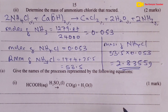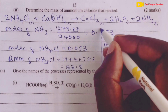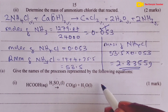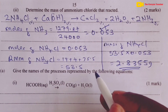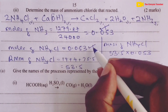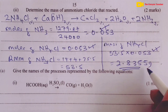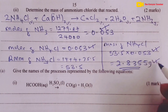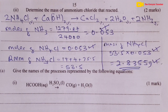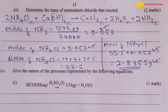This earns 2 marks: half for moles of ammonia, half for the correct 1:1 mole ratio, half for multiplication by molar mass, and half for the final answer. That is the end of our review of gas laws as tested in 2023 KCSE chemistry. Keep it on The Kenyan Teacher for more such reviews.